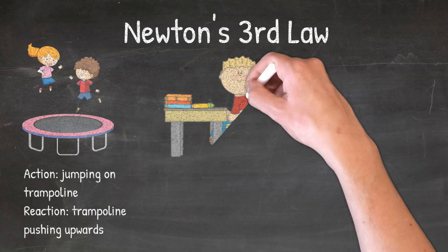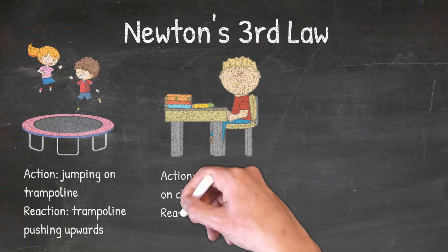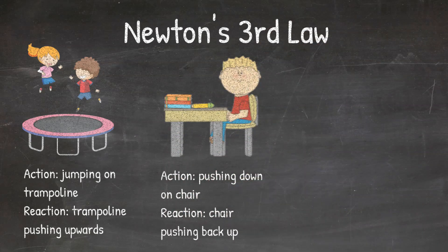When you are sitting in a chair you are applying a force down onto the chair which is the action, but the chair is applying the same force back up to you which is the reaction. That is why you are able to sit in the chair and not fall through the chair and hit the ground.